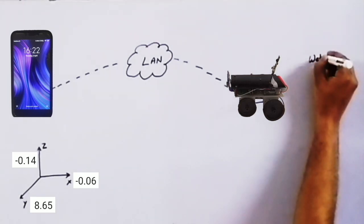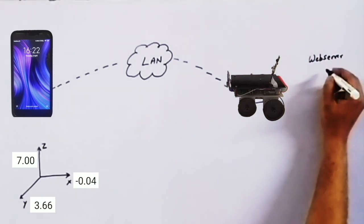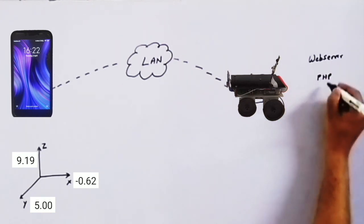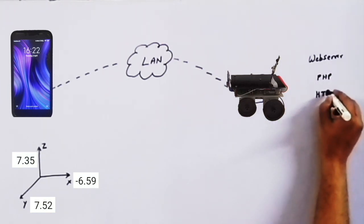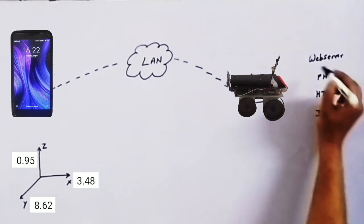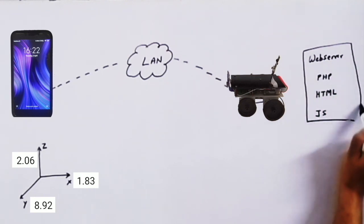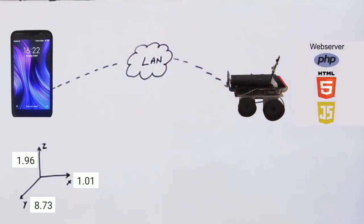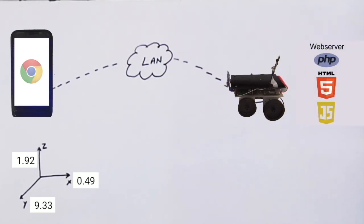Coming to rover, there is a web server up and running in Raspberry Pi. A custom code written in PHP, HTML and JavaScript is placed in the web server to generate the web page with the necessary functionality of capturing accelerometer data. Now, we can access this web page using a browser of a smartphone.